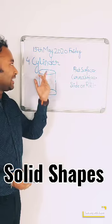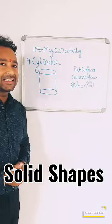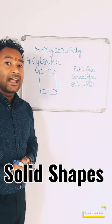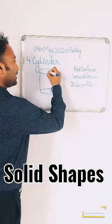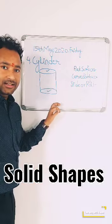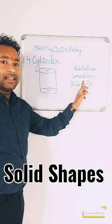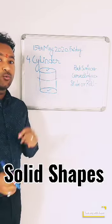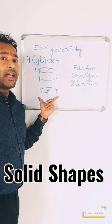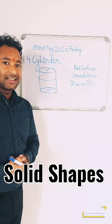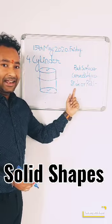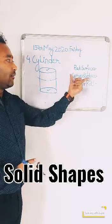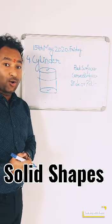The next shape is cylinder. How many flat surfaces are in a cylinder? There are two flat surfaces — one at the top and one at the bottom. And how many curved surfaces are in a cylinder? Only one curved surface. Now, will this cylinder slide or roll? Flat surfaces always slide, and curved surfaces always roll.